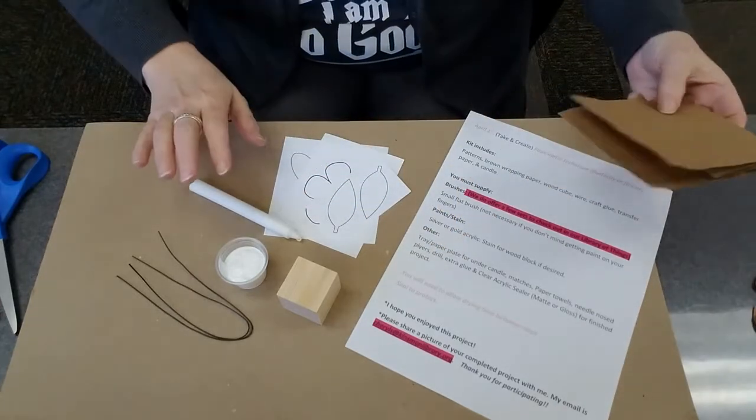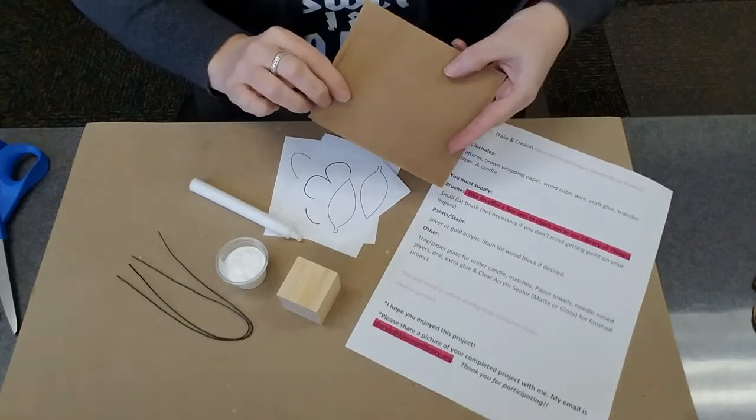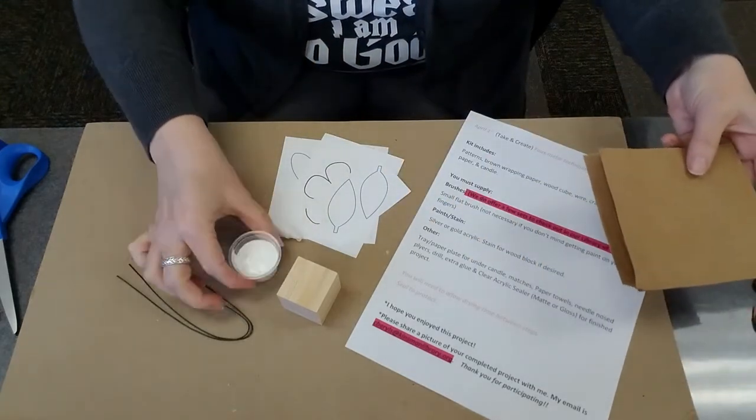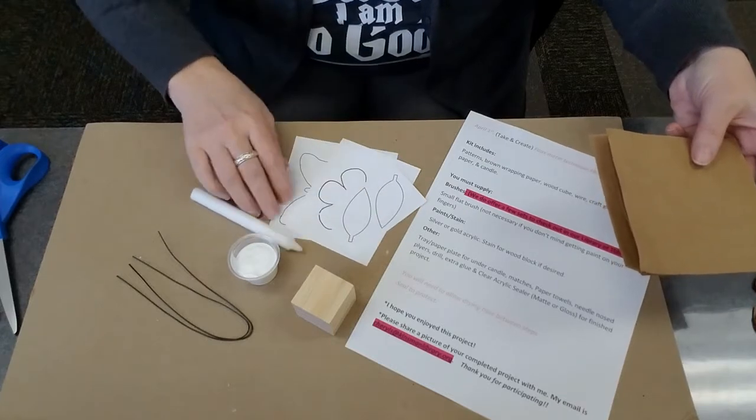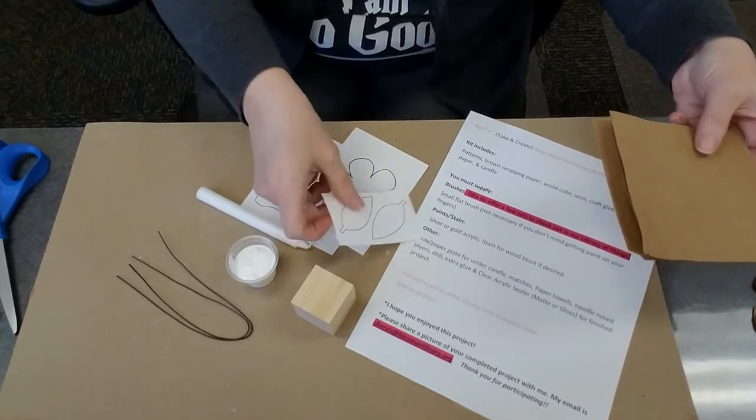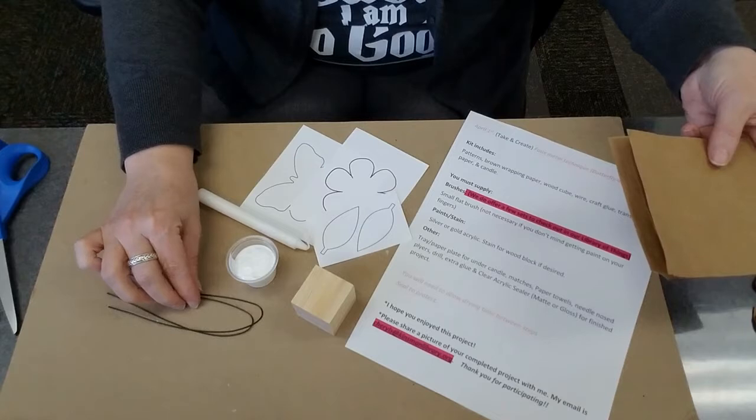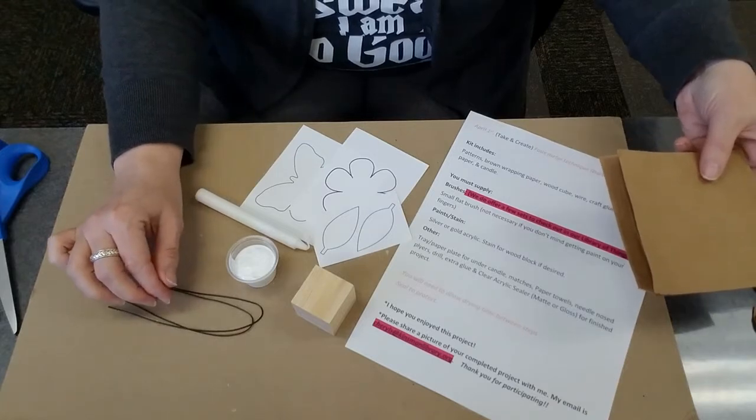So your kit's going to include a piece of paper bag, you're going to get glue, you're going to get a block, you're going to get a candle, you're going to get a pattern, we have a butterfly, a flower, and a leaf, and then you're going to get a couple strands of wire. And that's what's going to be your kit.